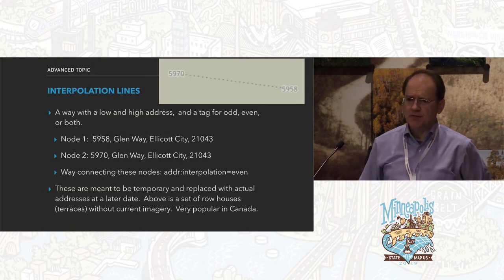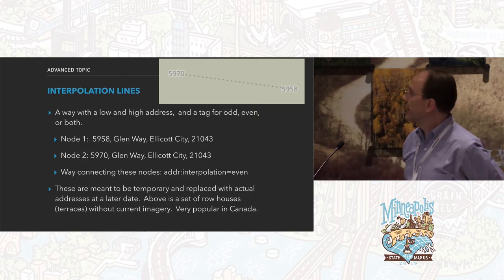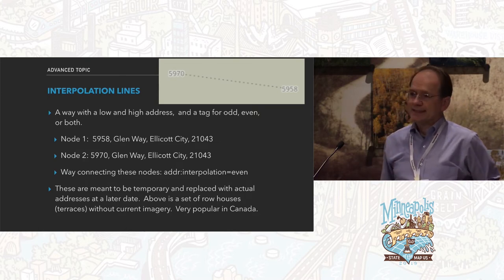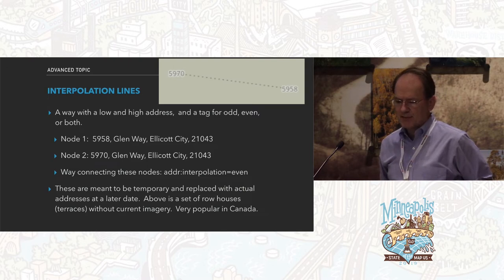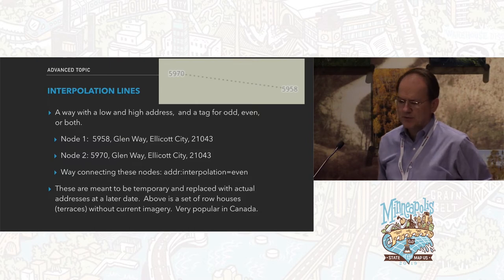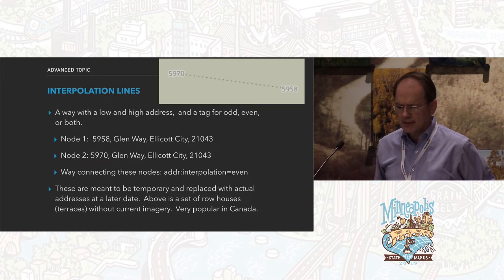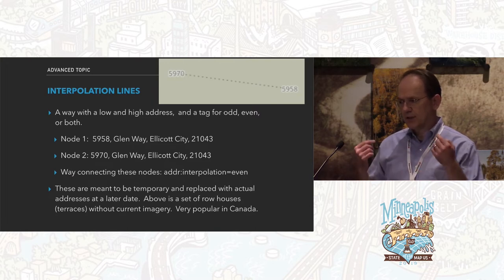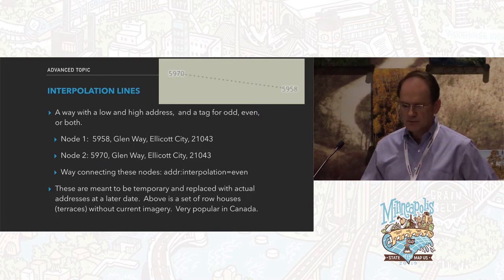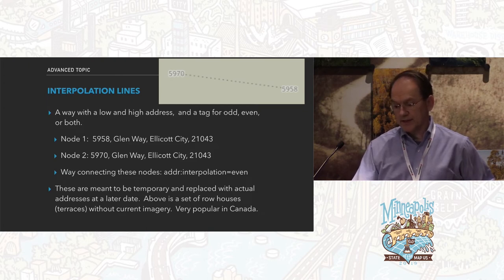Interpolation lines are an advanced topic. These are a way to enter addresses for things that aren't showing up on the imagery. This is what I put in for a set of row homes in Ellicott City where I live. Basically you're connecting a low and a high address and saying that between the low and the high, these are all evens or all odds. When I finally get some imagery, I will replace this with an actual set of townhomes.